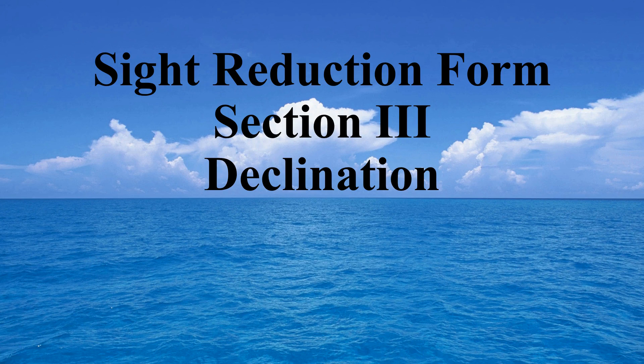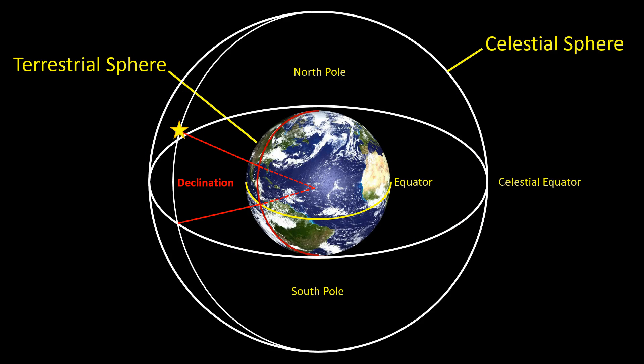In this video, we'll explain how to calculate declination on the site reduction form. Declination is the angle from the celestial equator to the celestial body, and is one of the values needed to obtain a line of position by using the site reduction tables.